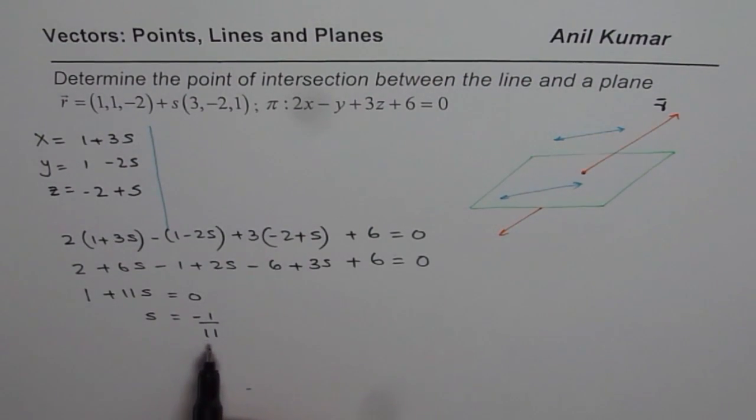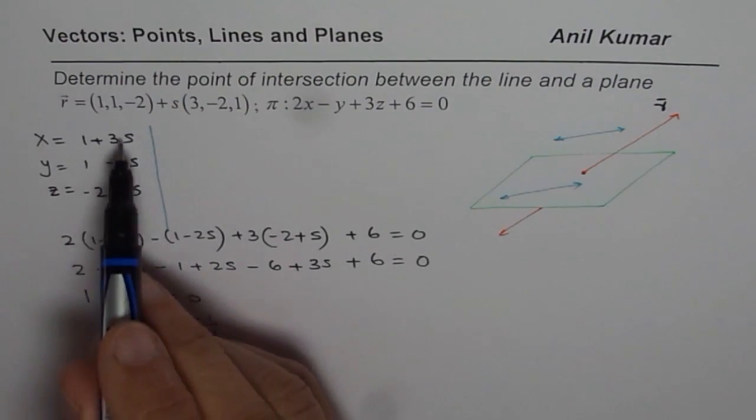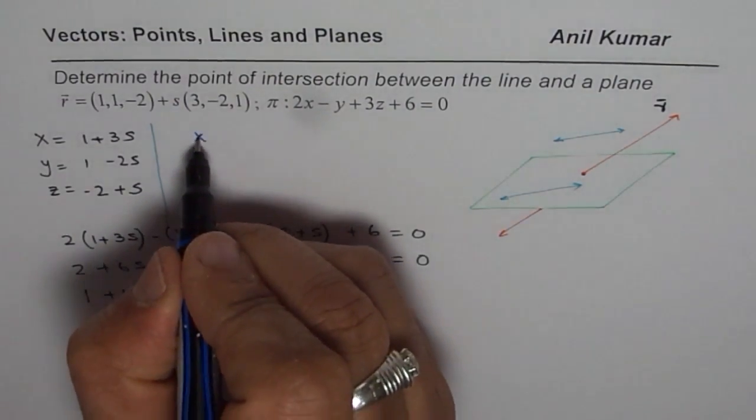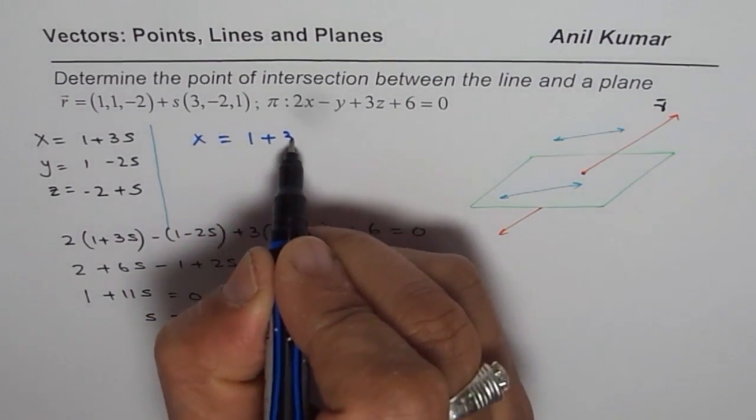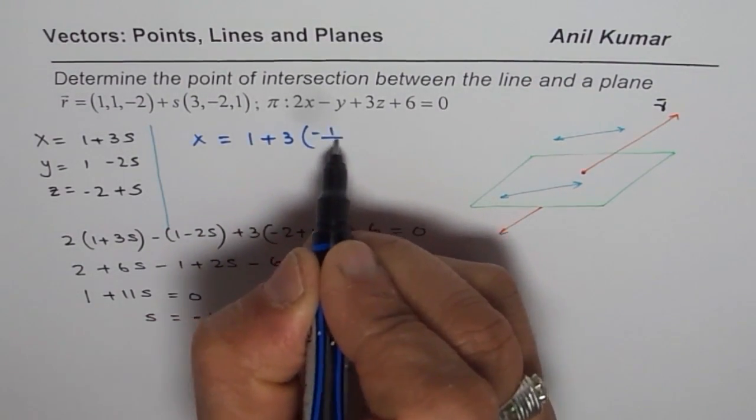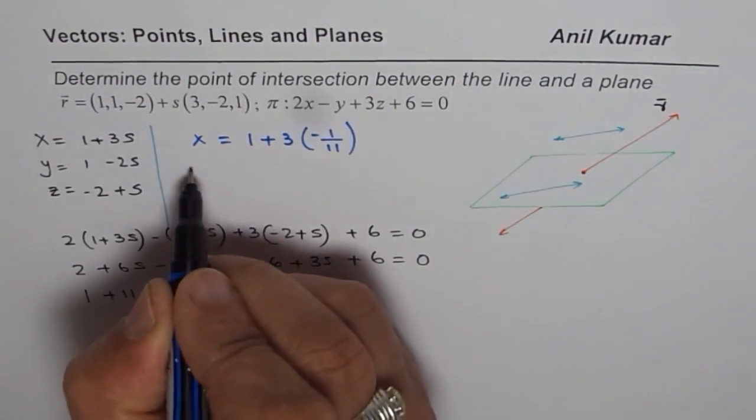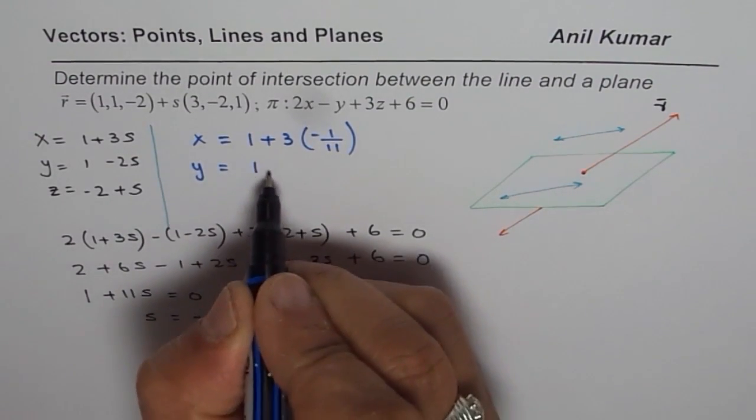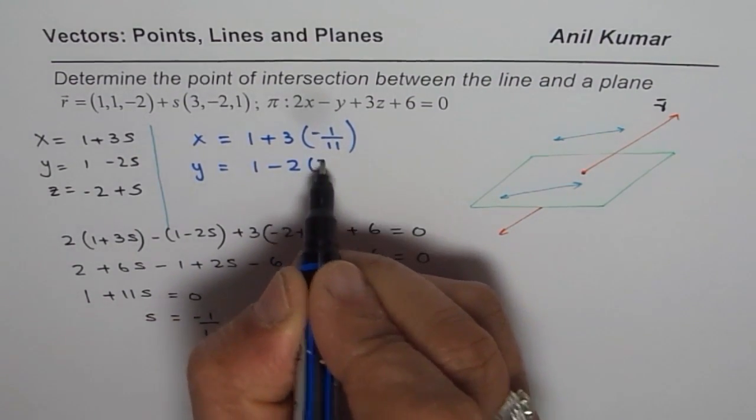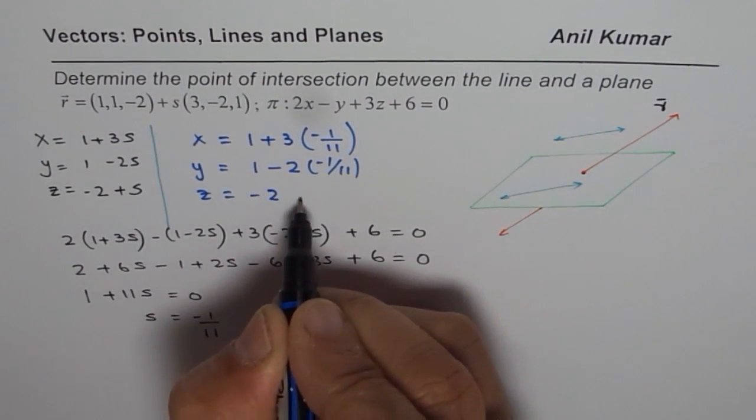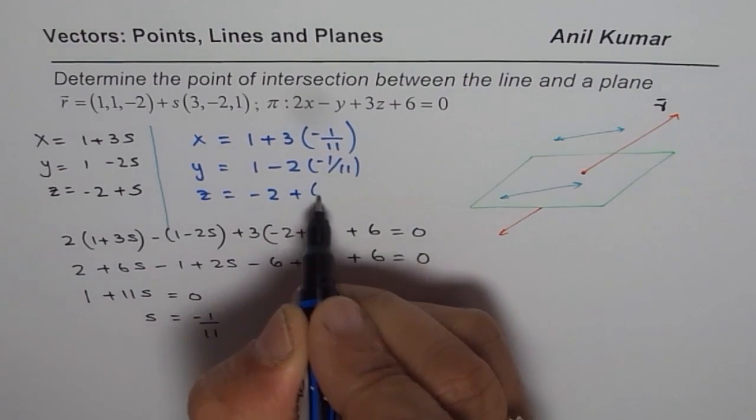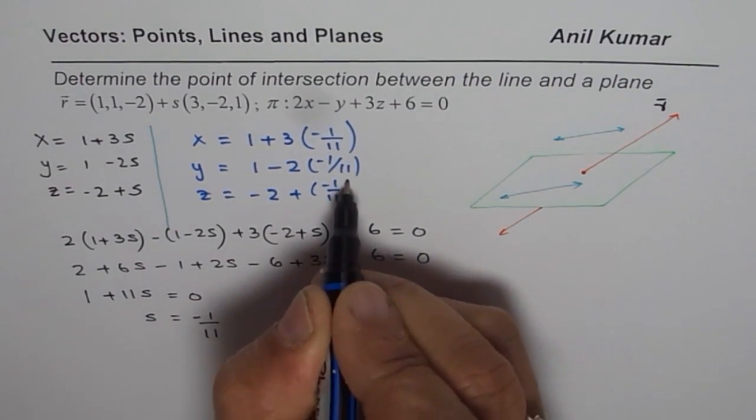Once we know the value of S, we can find the points. So, let us write down the value of S as minus 1 over 11. Find the coordinate points. x will be 1 plus 3 times minus 1 over 11. y is going to be 1 minus 2 times minus 1 over 11. And z is going to be minus 2 plus minus 1 over 11.